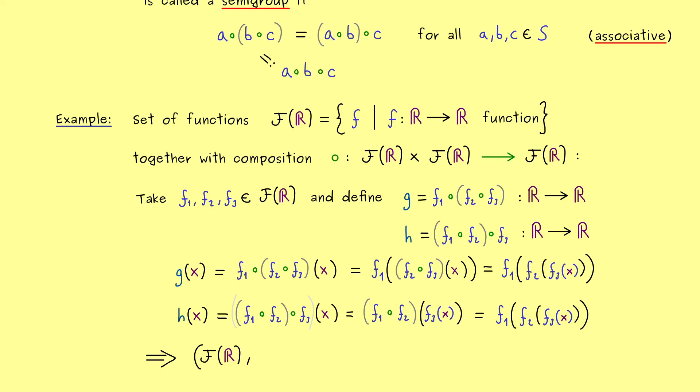With that we have our first semi-group. Now you know, we would write it as a pair. Set combined with the binary operation gives us the semi-group. Then I would say, with the next videos let's look what we can do with such semi-groups. I really hope we meet again and have a nice day. Bye bye.